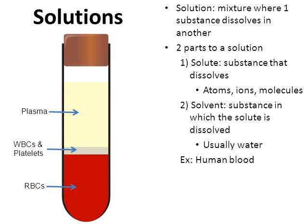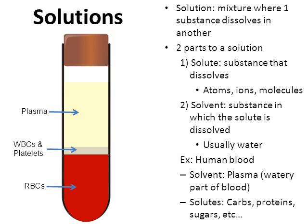You can really see that blood is a great example of a solution when you centrifuge it. Blood is made from a solvent — plasma is the watery part of blood, and because it's mostly made from water, that makes plasma your solvent. And there are also solutes in your blood: the carbohydrates, the proteins, the sugars — these are all molecules dissolved in your plasma, the watery part of your blood.